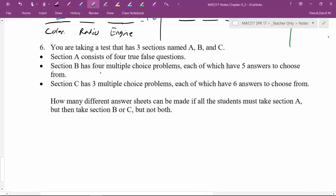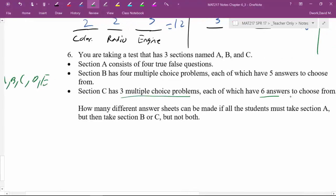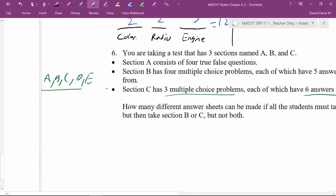Section B has four multiple choice problems, each of which has five answers to choose from. So what I mean is, like Scantron, A, B, C, D, or E, choose which one. Section C has less problem. This has three multiple choice problems, but each of them has six answers. So there's less to do, but there are more options. A, B, C, D, E, and F, right?